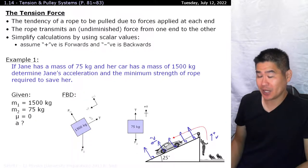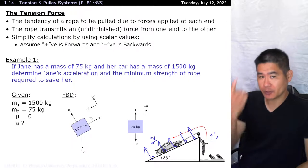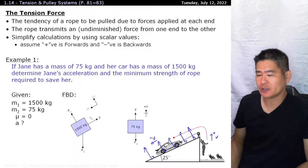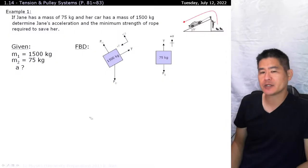As for Jane, the tension of the rope is pulling her upwards and the force of gravity is pulling her downwards. And that's it for the free body diagrams.